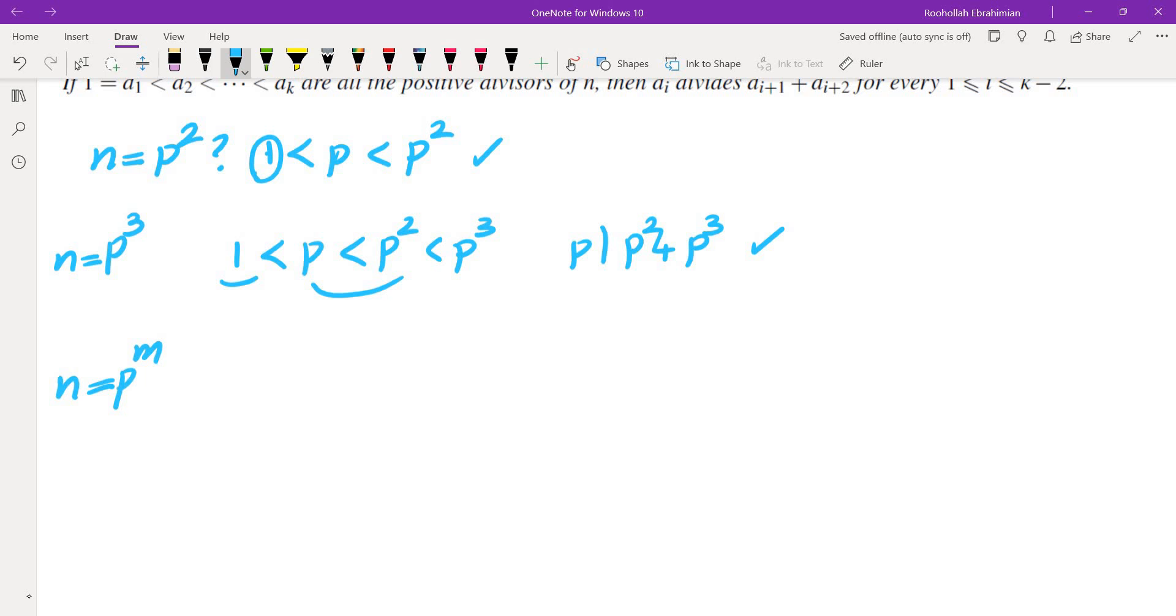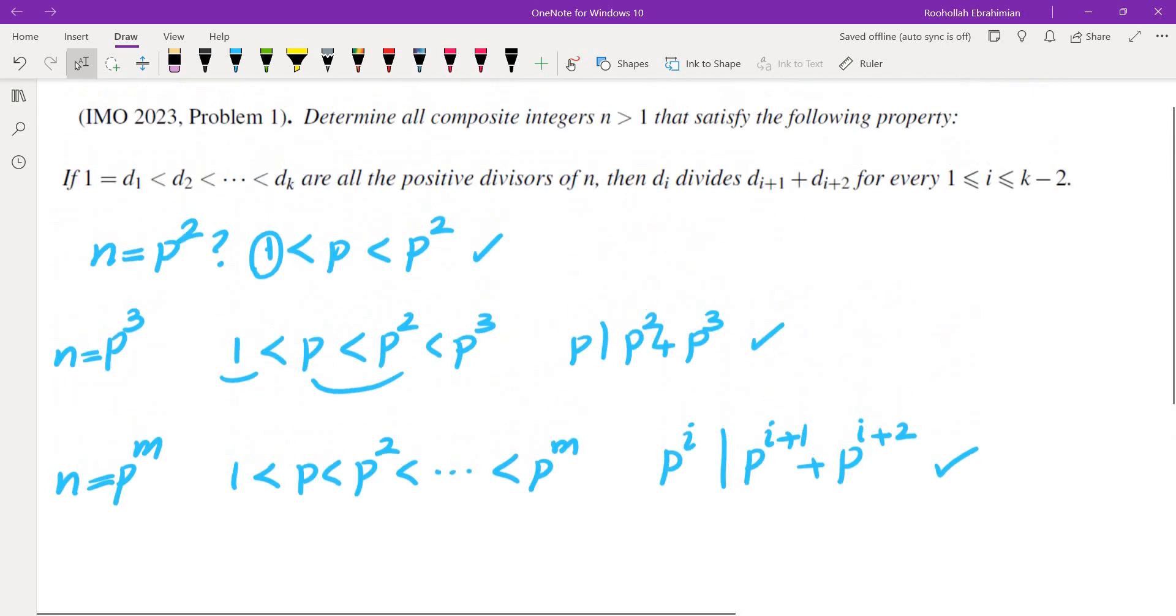What if n is a power of a prime? Then you would have 1, p, p squared all the way to p to the power of m. And what we need is p to the power of i to divide p to the power of i plus 1 plus p to the power of i plus 2, which is clearly a possibility.